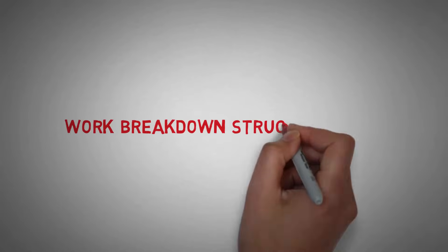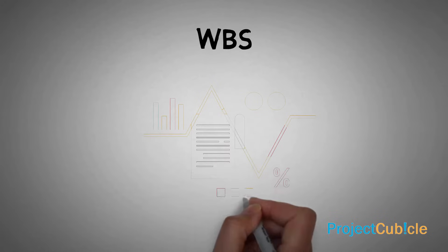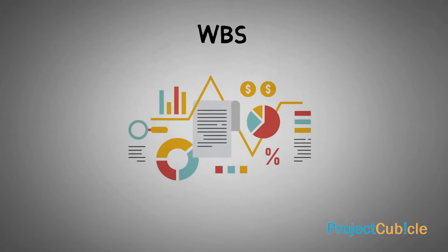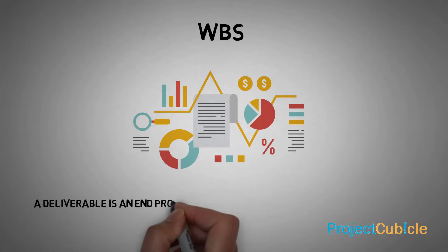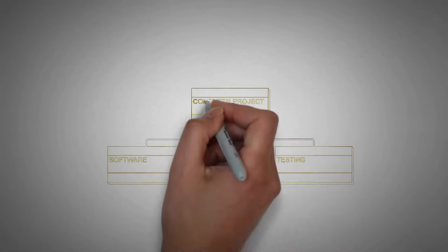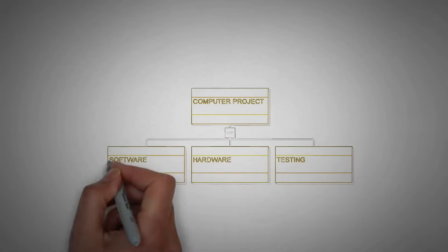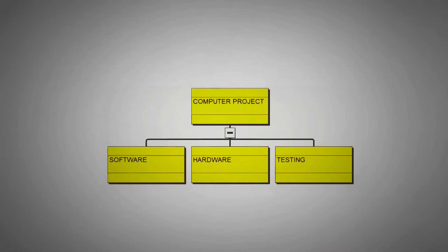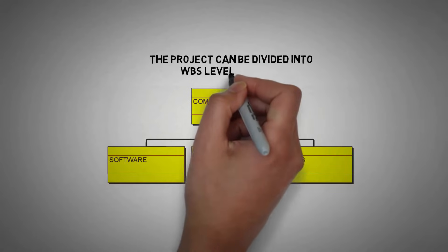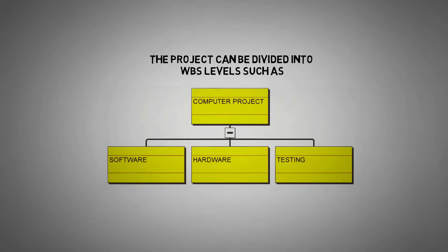Work Breakdown Structure. WBS is essentially a hierarchical breakdown of all the project deliverables. A deliverable is an end product or service that the project is producing. For example, if we have a project to create a new computer, the project can be divided into WBS levels such as software, hardware and testing.